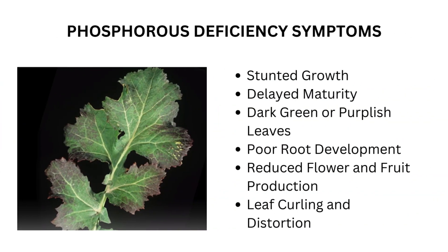Next up is phosphorus, and here we have a phosphorus deficient leaf. One of the major signs that you will see in a phosphorus deficient plant is that the leaves will start to have a purple discoloration, or they will have a very dark green depending on the type of plant. In addition to the purple discoloration of the leaves, you will also notice stunted growth, delayed maturity, reduced flower and fruit production, and some leaf curling and distortion.